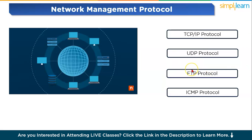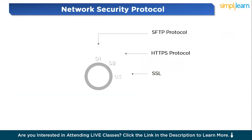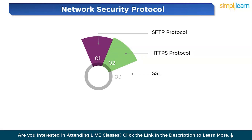Security protocols protect sensitive data from unauthorized access, cyber attacks, and data breaches. SFTP — Secure File Transfer Protocol — encrypts file transfers using public key authentication. HTTPS — Hypertext Transfer Protocol Secure — is the secure version of HTTP that encrypts data between browsers and servers. SSL — Secure Sockets Layer — ensures encrypted communication over the network, preventing eavesdropping and data theft.